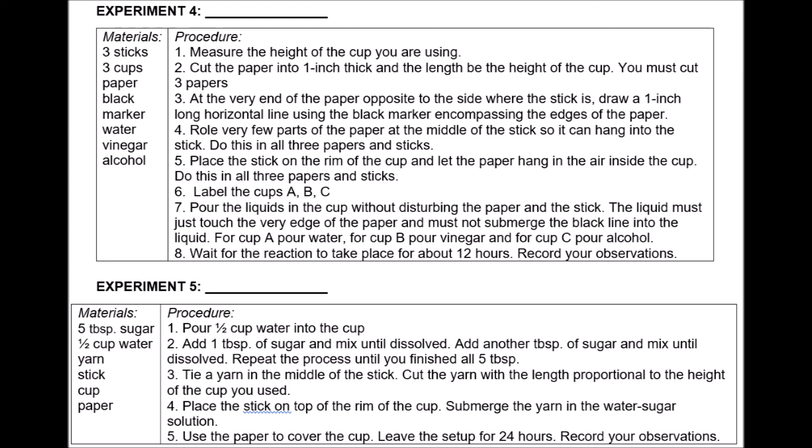Experiment number five, we have pour one half cup of water into the cup. Add one tablespoon of sugar and mix until dissolved. Add another tablespoon of sugar and mix until dissolved. Repeat the process until you finish all five tablespoon. Tie a yarn in the middle of the stick. Cut the yarn with the length proportional to the height of the cup you used. Place the stick on top of the rim of the cup. Submerge the yarn in the water sugar solution. Use the paper to cover the cup. Leave the set up for 24 hours. As I said earlier, so that is a simple experiment on what we call fractional crystallization. Okay. So that fractional crystallization is only a simple experiment. But it has more practical uses that you can search or research on already. So those are some basic separation techniques.